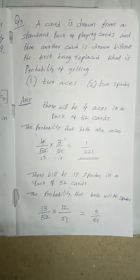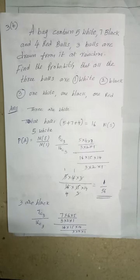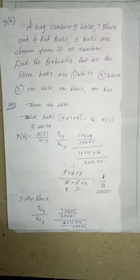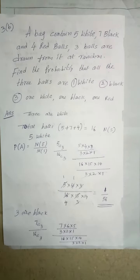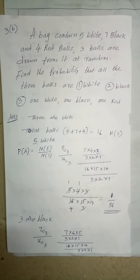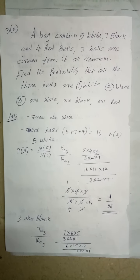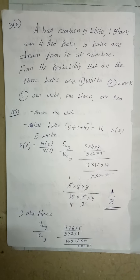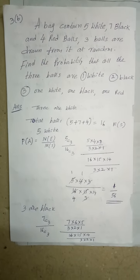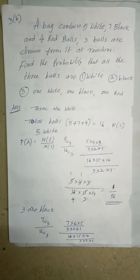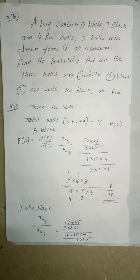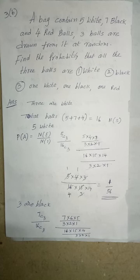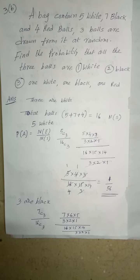Important questions for you. Not taking much time of yours. See the question, copy the question. A bag contains 5 white, 7 black, and 4 red balls. 3 balls are drawn at random from it. Find the probability that all 3 balls are white, black and 1 white, 1 black and 1 red.